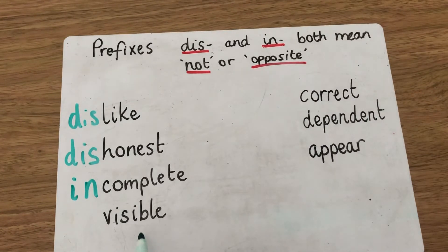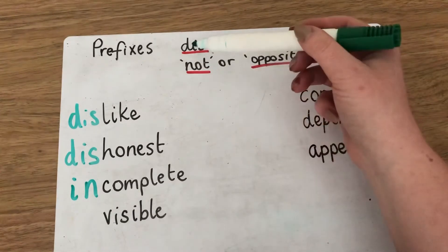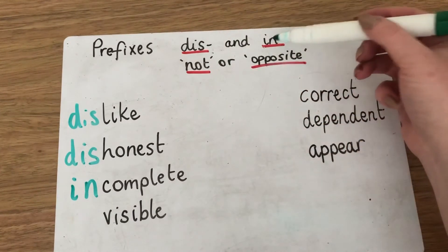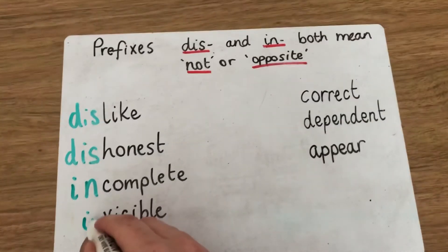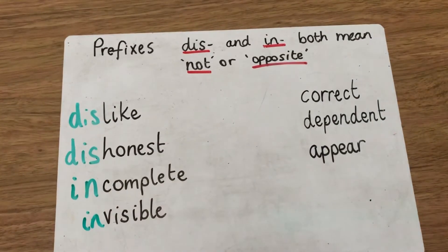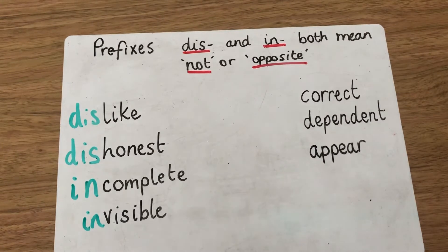And the last example here, we've got 'visible'. Visible means that you can see something — it's there, it's visible. So if we had 'dis-visible' or 'invisible', it would be 'invisible'. If something is invisible, you can't see it anymore, it's not there. So 'visible' — you can see it; 'invisible' — you can't see it anymore.